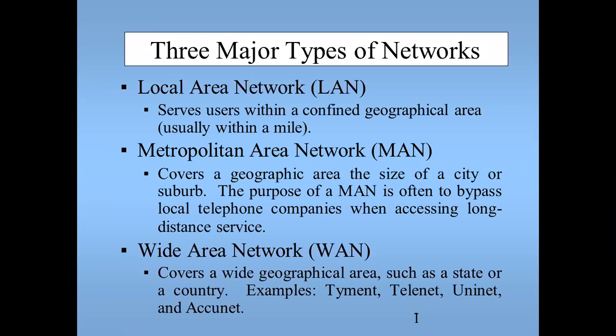There are three major types of networks. First, the local area network, which serves users within a confined geographic area, usually within a mile. Second, the metropolitan area network, which covers a geographic area the size of a city or a suburb. The purpose of a metropolitan area network is to bypass local telephone companies when accessing long-distance high-speed service.